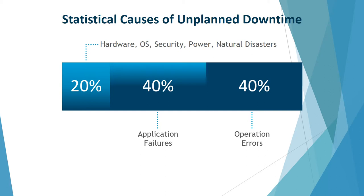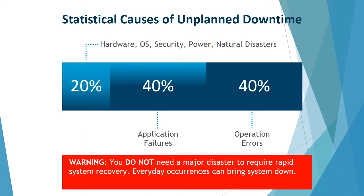Looking at the statistical causes of unplanned downtime: 20% will be hardware and operating systems, security, power surges, and natural disasters. The big chunk — 80% — is going to be application failures, operational errors, and human error. Someone puts in something wrong, keys in something wrong, forgets a step, clicks the wrong button. It's that 20-40-40 ratio. We really need to have systems in place to address each of these kinds based on what systems and data are most important to your business. You do not need a major disaster to need these preparations in place.